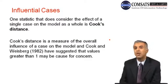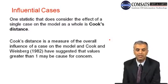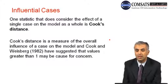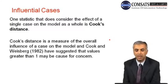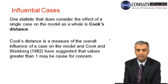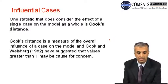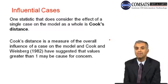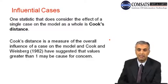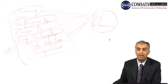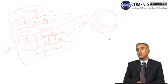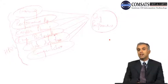Another important measure used for detecting influential cases is Cook's distance. This also measures the impact of a single case on the model. Once this value is calculated, values greater than 1 are termed as outliers. After discussing these different values regarding multiple regression and how to track outliers, we took a practical model.